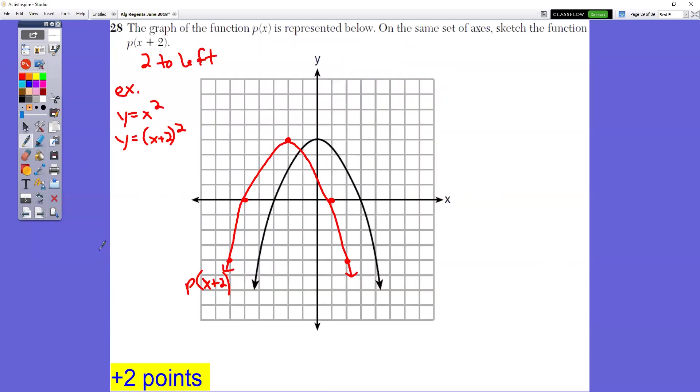In question number 28, the graph of the function p of x is represented below. On the same set of axes, sketch the function p of x plus 2. Well, adding 2 to the x value makes it go two places to the left. I would just type in, for example, for x, let's say that we have y equals x squared. That's what the graph of this is. And then we would add 2 just to the x, so that x squared would become x plus 2 squared, because we're adding 2 to just the x value. We end up with this as a graph because we're translating it two places to the left. That's what adding 2 to just the x value does.